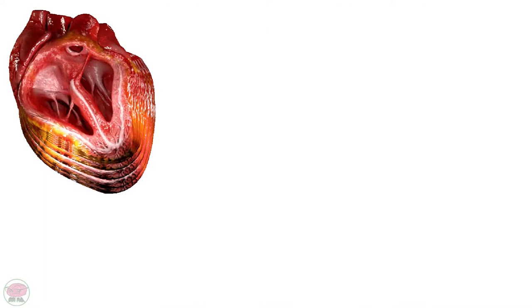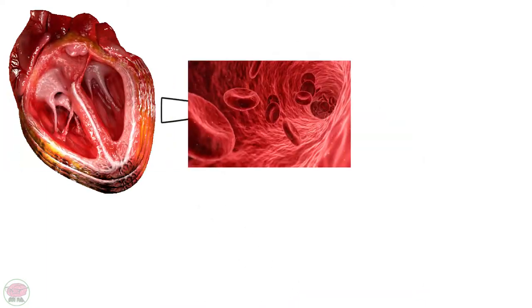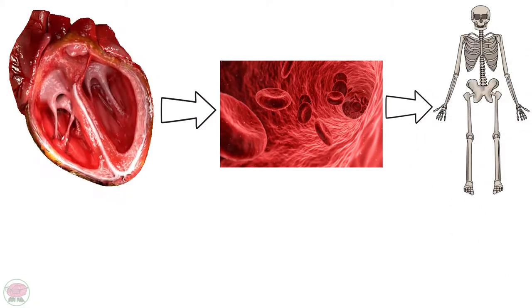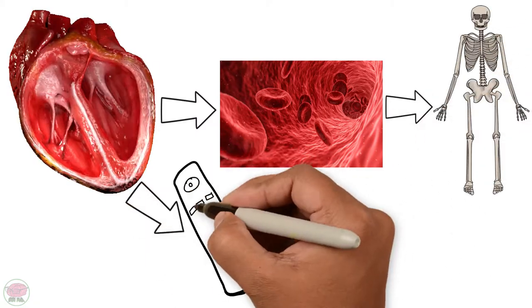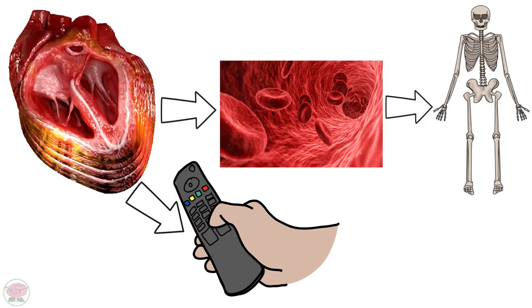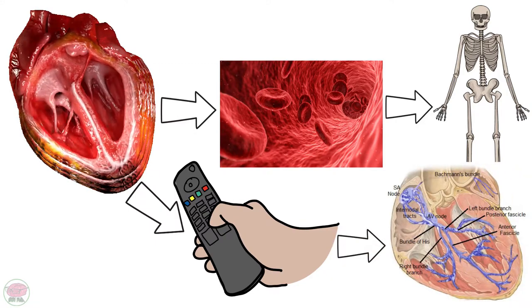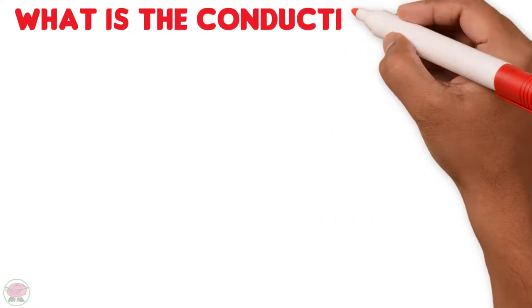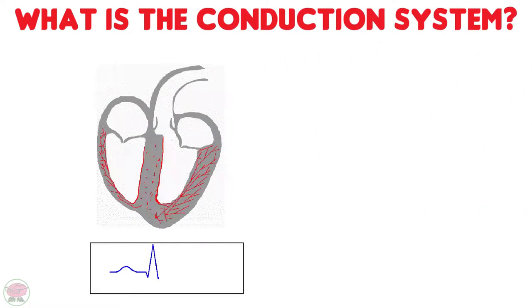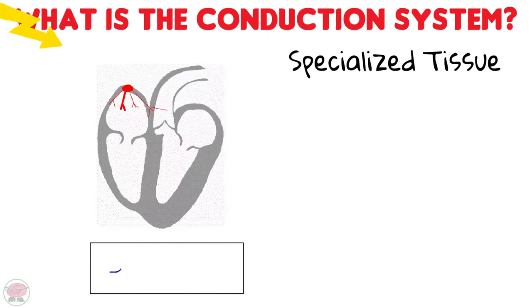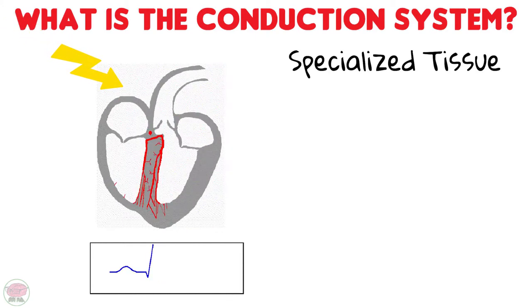The heart functions as a pump in order to deliver blood to every tissue of the body, but as a pump it requires controls to tell it when to pump and how fast to do it. That is the function of the conduction system. So what is the conduction system? It's a network of specialized tissue within the heart that is able to generate an electrical impulse which causes the heart muscle to contract.